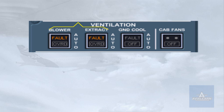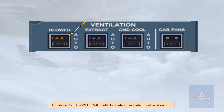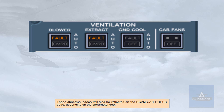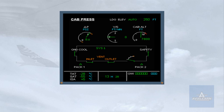Let's look at some abnormal indications associated with the ventilation system. The fault lights on either the blower or the extract push-button switches illuminate in case of low pressure, computer problems, or as a smoke warning. In addition, the blower fault light illuminates to indicate a duct overheat. These abnormal cases will also be reflected on the ECAM cabin pressure page depending on the circumstances. In the example shown, both inlet and outlet indications have changed to amber. Since this is a fault with the ventilation system, the VENT indication also turns amber.